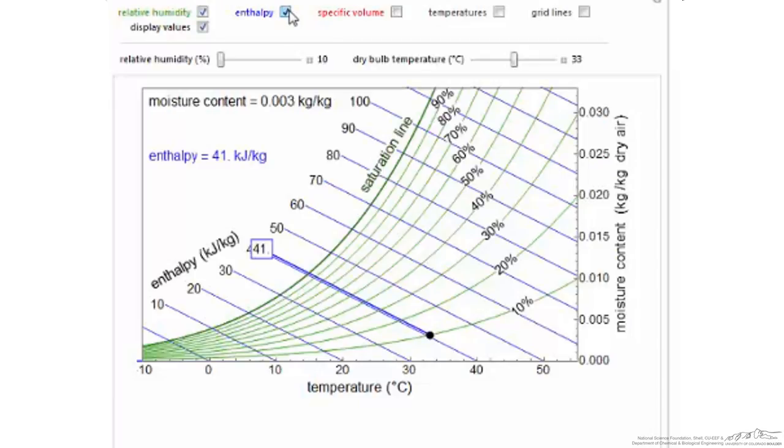The next parameter to be added is the enthalpy. The enthalpy lines have a negative slope of approximately negative 30 degrees from horizontal. The enthalpy is in units of kilojoules per kg of dry air and is strictly just for the saturated conditions.